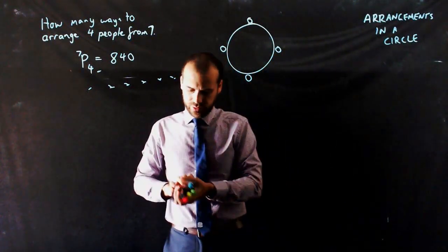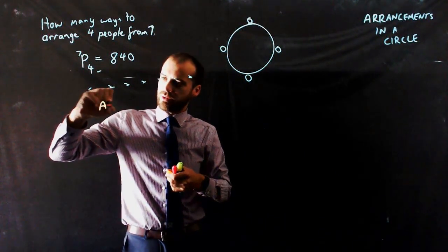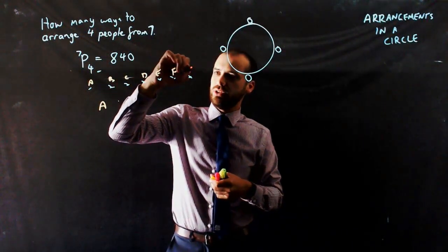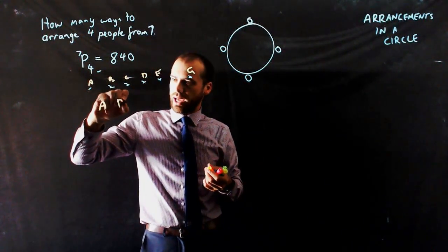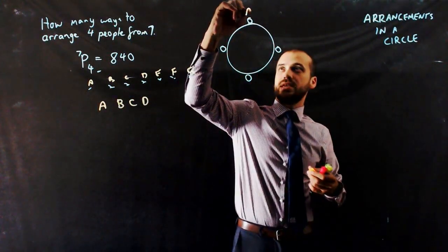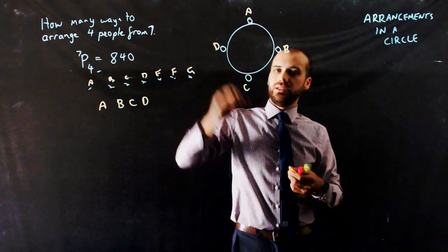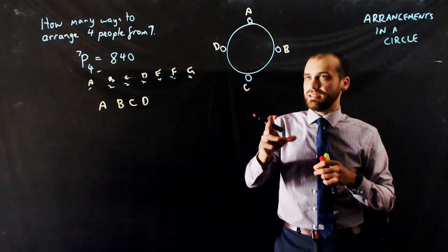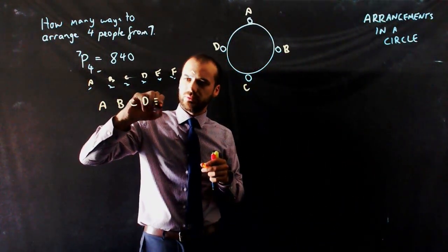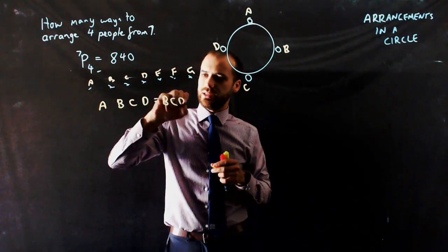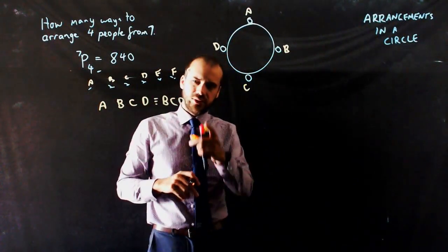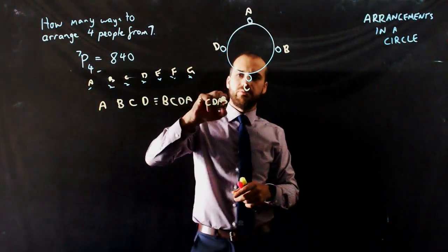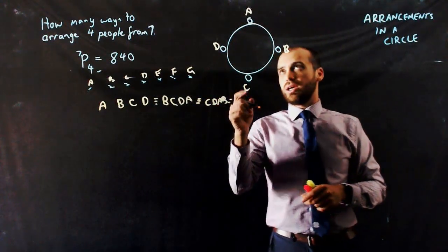Consider this arrangement here. If I label these people A, B, C, D, E, F, G, and I use the arrangement A, B, C, D and seat them at the table, it should be clear that A, B, C, D is actually the same arrangement as B, C, D, A, which is the same arrangement as C, D, A, B.